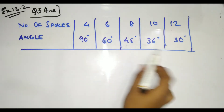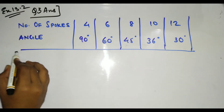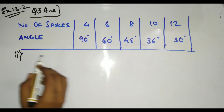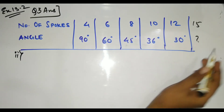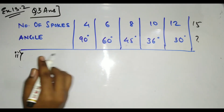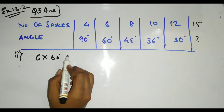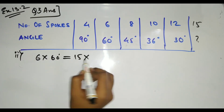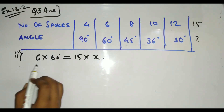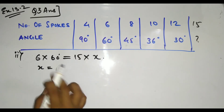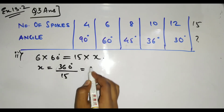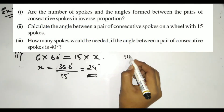For the second part of question 3, we need to find the angle if the number of spokes is 15. Using 6 × 60 = 15 × x, we get x = 360 ÷ 15 = 24°. So the angle between consecutive spokes for 15 spokes is 24 degrees.